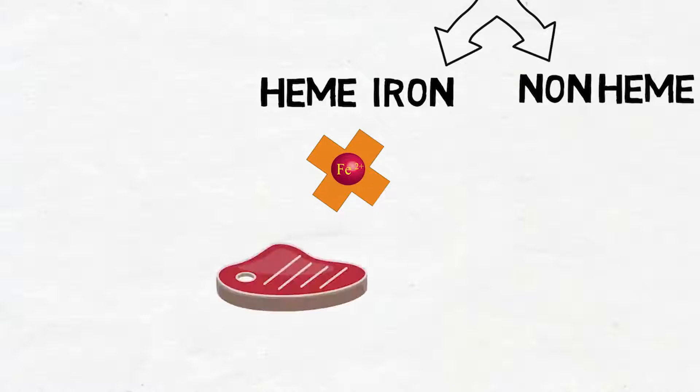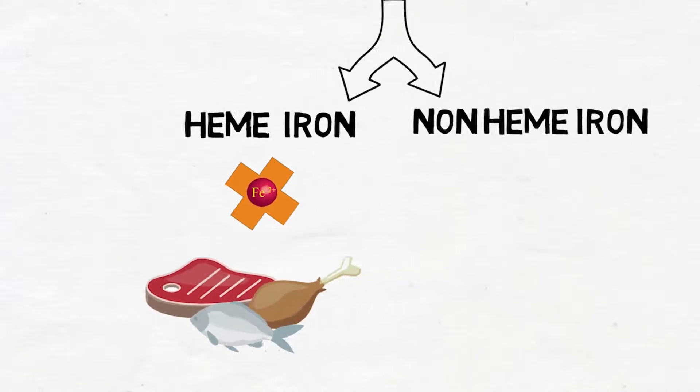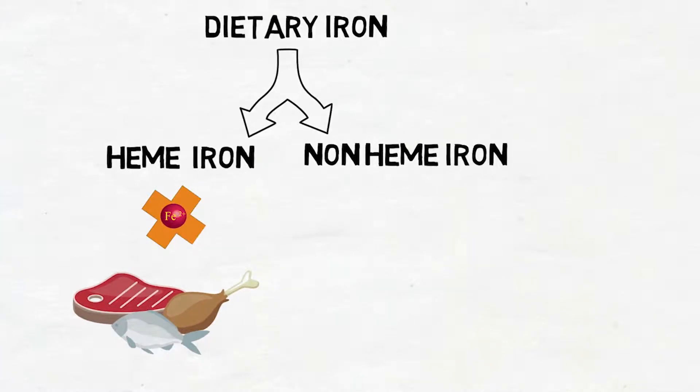Non-heme iron means Fe3+ iron, basically found in plant-based food like vegetables, fruits, nuts, seeds, etc.